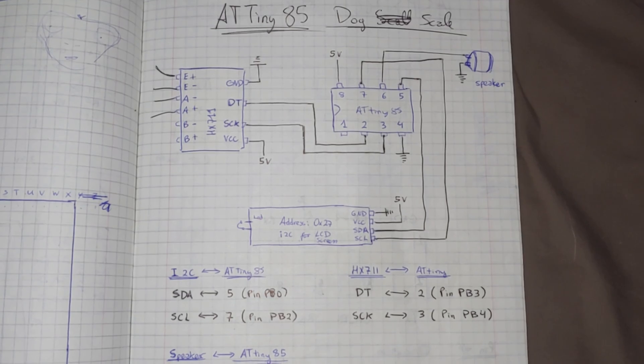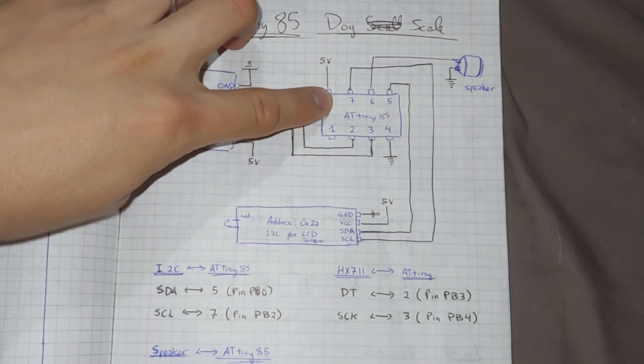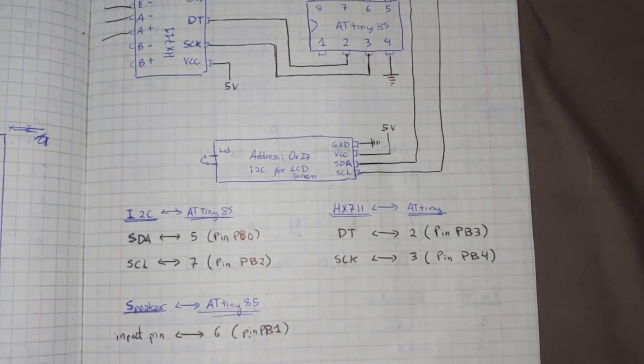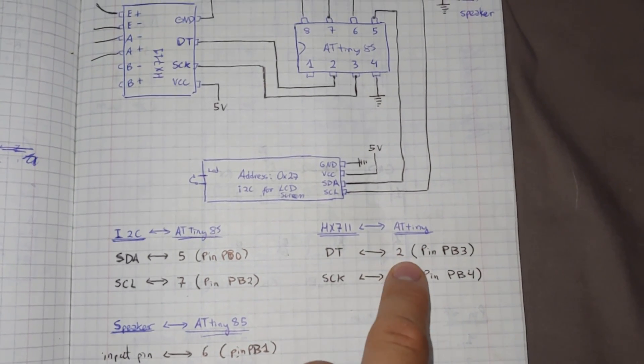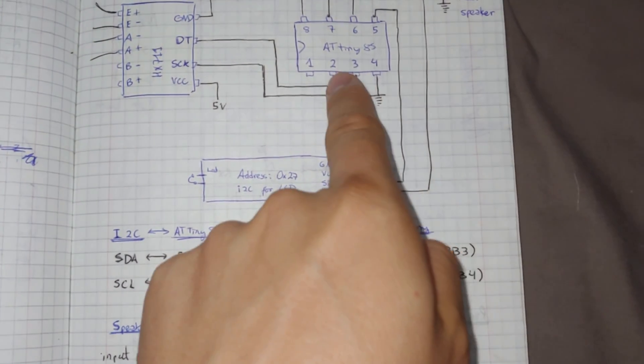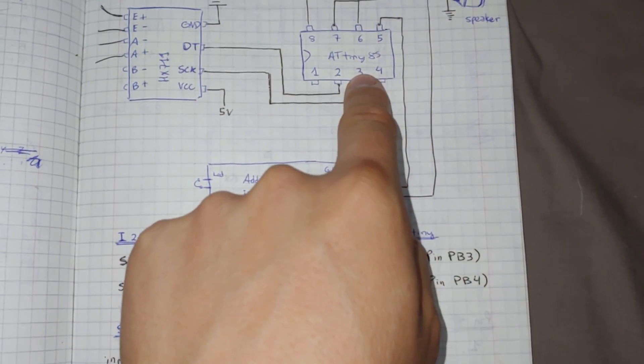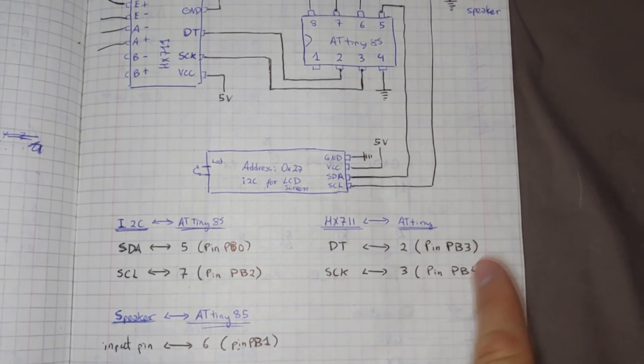Here we have the diagram for the ATtiny project. This is the HX711 module, the ATtiny85, the I2C module, and the speaker, and they'll be connected this way. For the HX711 to the ATtiny, we will connect data to physical pin 2, and then clock to physical pin 3. But keep in mind that in code we will refer to these pins as 3 and 4.